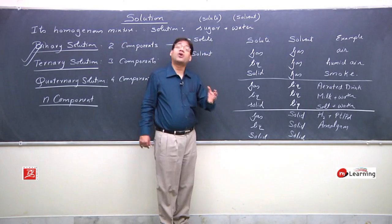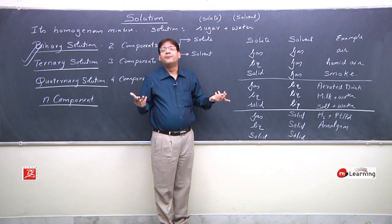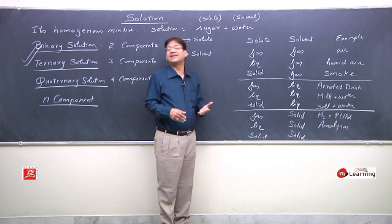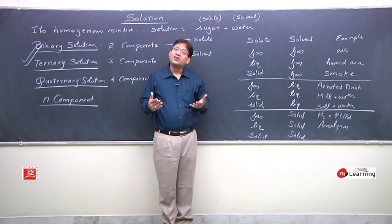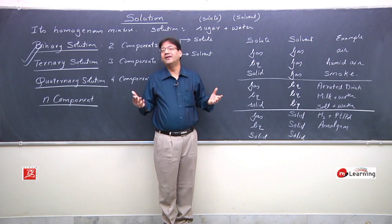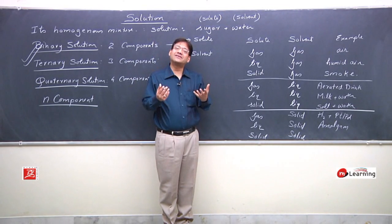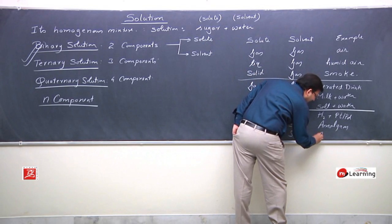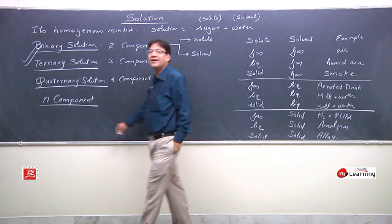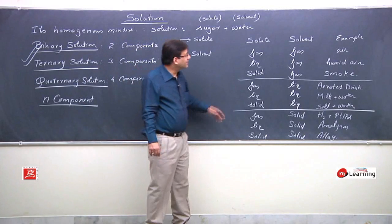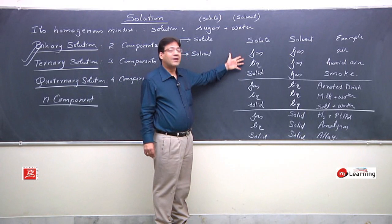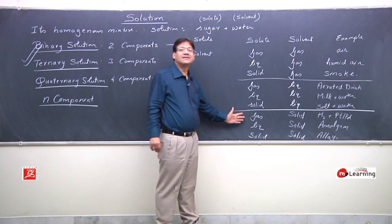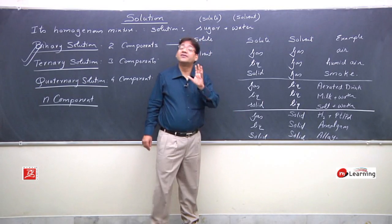The last type is solid in solid — all the alloys. Examples include bronze, gun metal, bell metal, duralumin, and magnalium. For bronze: copper dissolved in zinc, or zinc dissolved in copper — both are solid and mix together to form an alloy. The copper and zinc in that alloy cannot be easily separated. Alloys are examples of solid dissolved in solid. So in total there are 9 types of solutions: the first three are gaseous solutions, the next three are liquid solutions, and the last three are solid solutions.